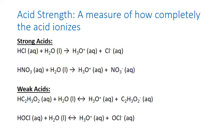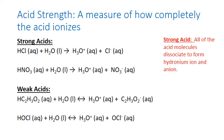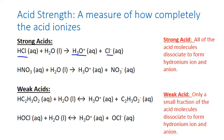Acid strength is a measure of how completely the acid ionizes in water. The stronger the acid, the more completely it ionizes. For strong acids, pretty much all of the acid molecules dissociate to form hydronium ion and the conjugate base. For weak acids, on the other hand, only a small fraction of the acid molecules dissociate, and we're left with a significant fraction of our original acid. The difference between the two ultimately lies in the strength of the bond between the hydrogen that ionizes and the anion portion of the acid. The stronger that bond, the harder it is for the hydrogen to ionize and the weaker the acid. Conversely, the weaker the bond, the easier it is to ionize and the stronger the acid.